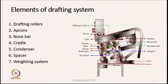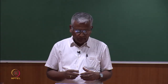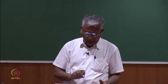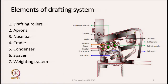There is a frame on which the rollers are mounted and we have two sets of rollers: bottom rollers and top rollers. You are all familiar with the drafting system since we have already gone through the draw frame course. So other than the drafting rollers, we have some other parts which are not present in the drafting unit of a draw frame.